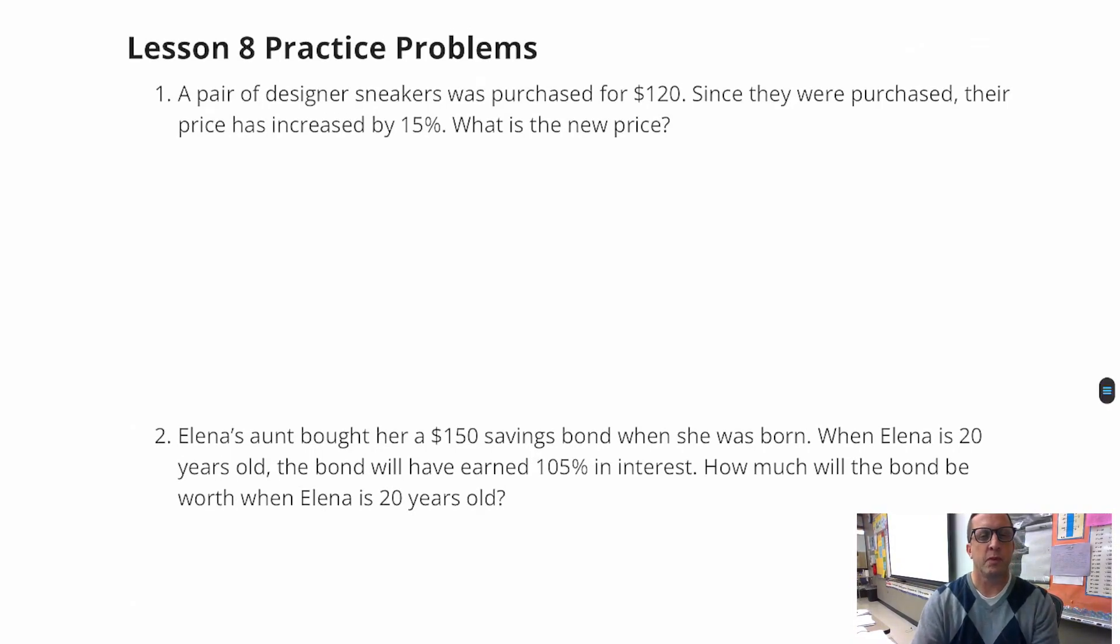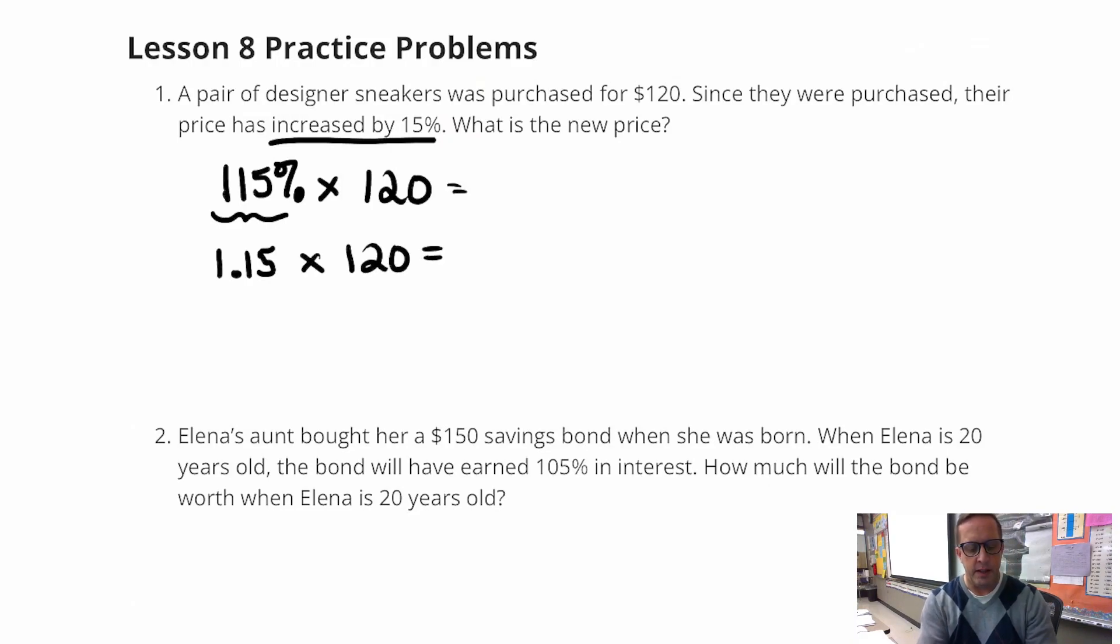For this one, we're just going to do the percent. This one says it's a percent of increase, so you're going to add that to 100%. So we're going to find 115% of, or in other words, times 120. Make sure you guys change that to a decimal. So 1.15 times 120, and you'll get 138. And that's the price after the discount.